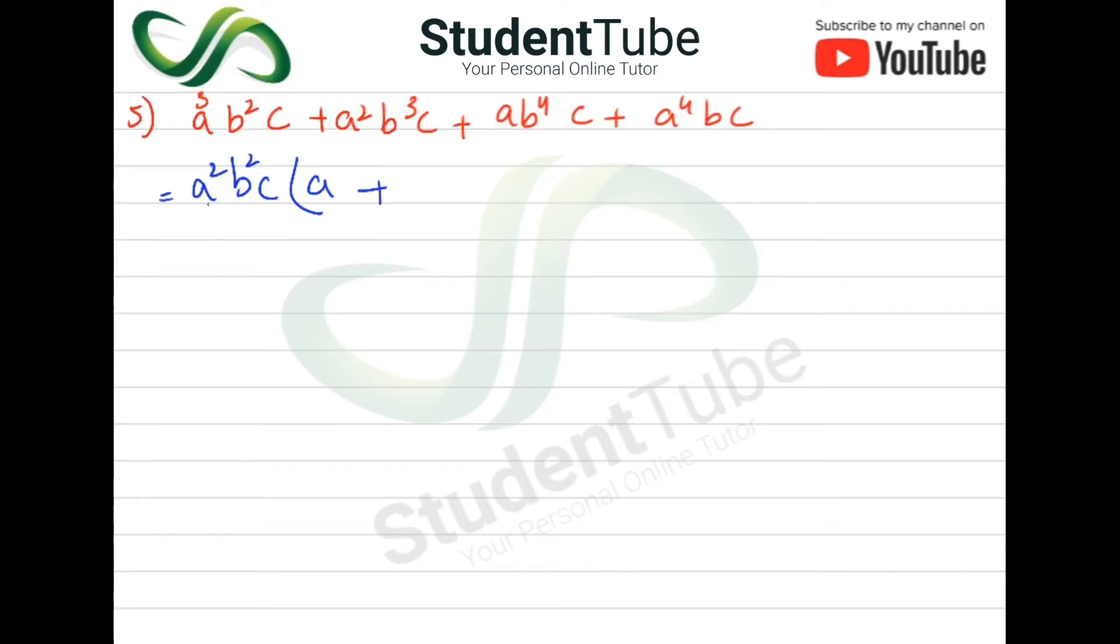a² is outside so it will not come inside. b³ is outside, b² is outside, means that b will come. c is inside and outside, then c will not come inside. This is closed, then we have put a plus sign.